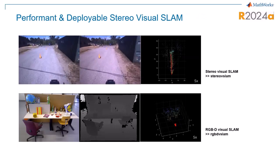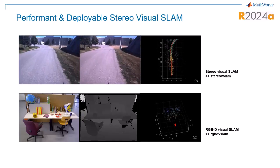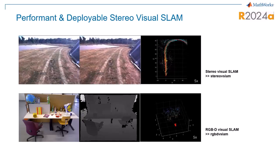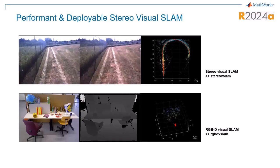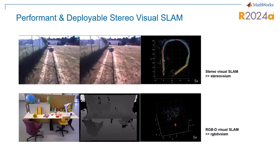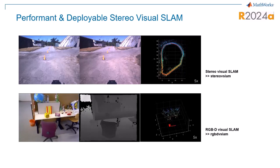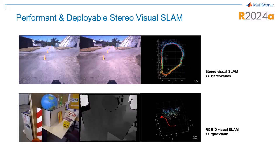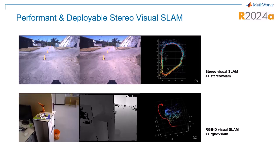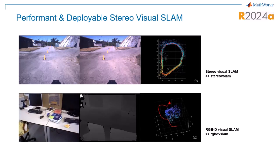In R2024A, the Computer Vision Toolbox supports stereo and RGBD cameras for enhanced 3D mapping, with the advantage of direct depth measurement over monocular SLAM. The Stereo SLAM class object, StereoVSLAM, processes feeds from dual cameras to mimic human vision and depth perception, while the RGBD SLAM class object, RGBDVSLAM, combines readings from a camera with a depth sensor, improving mapping precision in dynamic environments.